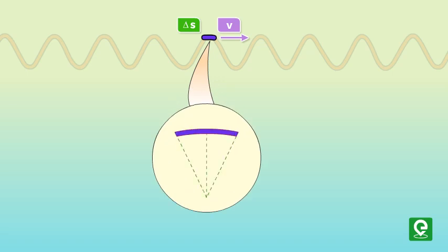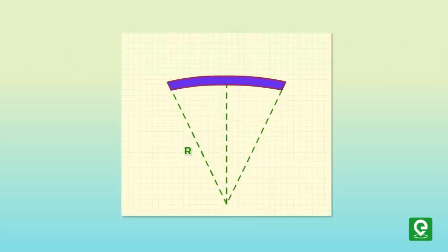The element has centripetal acceleration equal to v squared by r, which is supplied by components of the force T whose magnitude is equal to the tension in the string. The force T acts on both sides of the element and is tangent to the arc.